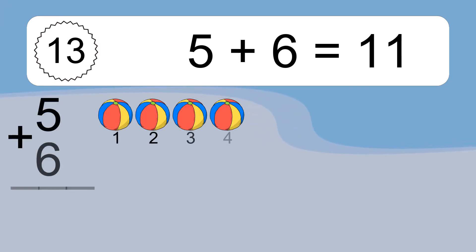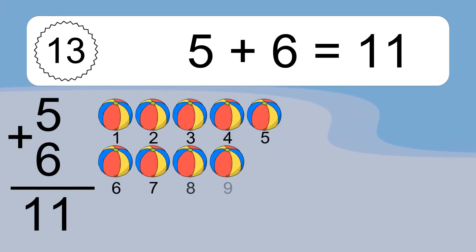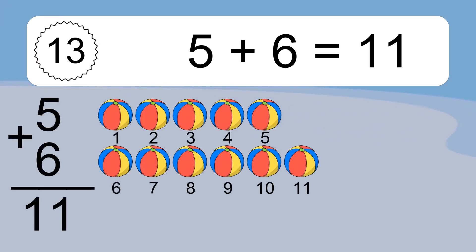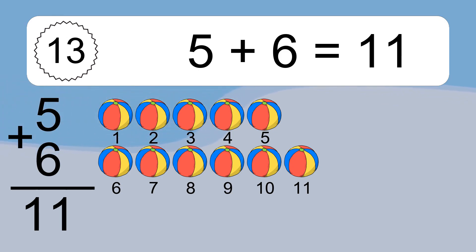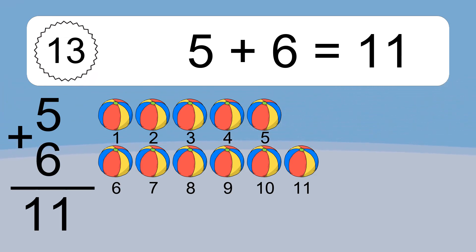Five plus six equals what? Eight plus six equals eleven. Let's count it: one, two, three, four, five, six, seven, eight, nine, ten, eleven.